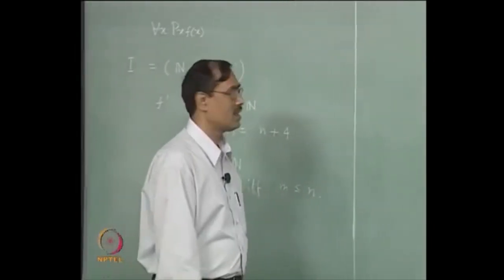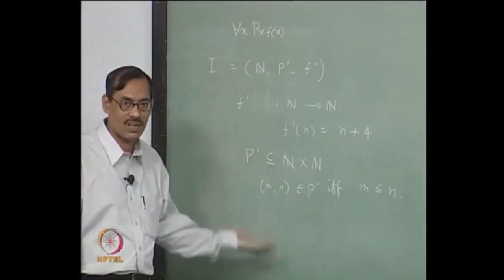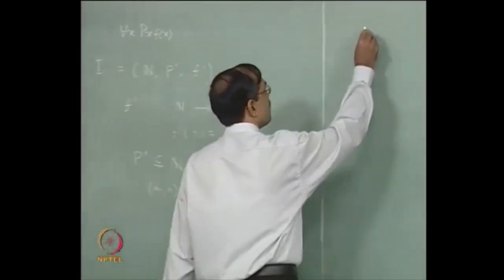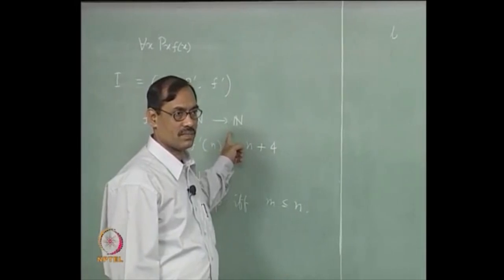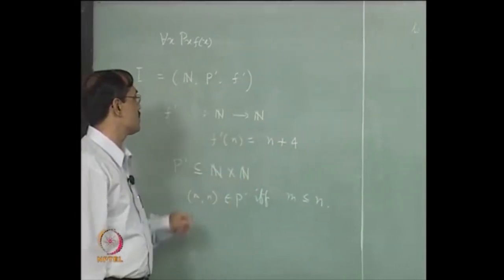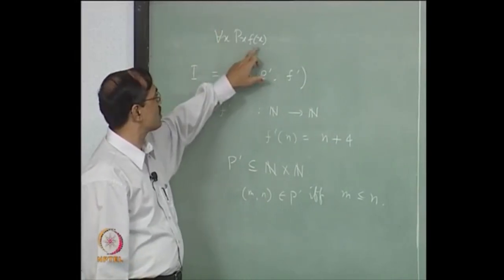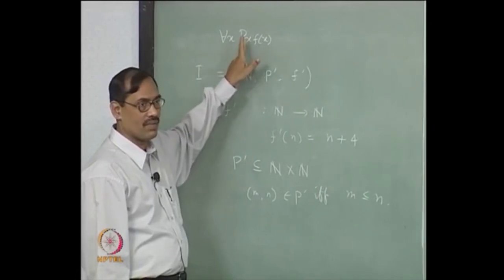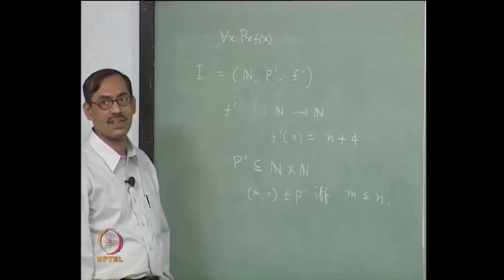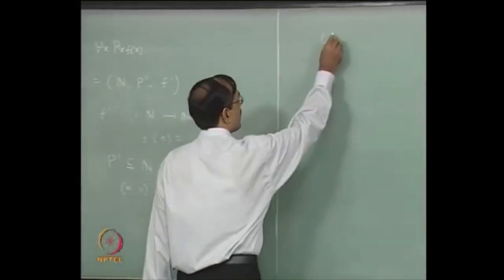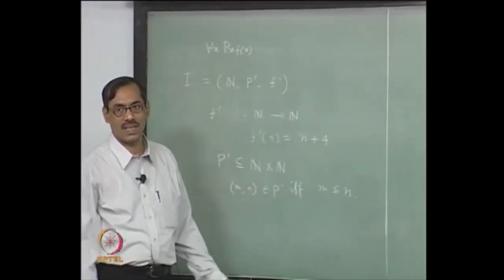Let us start with one state. A state begins with a valuation. There is only one variable x occurring here. Let us say l is one valuation under this interpretation. We can give l(x) = 2, fixing it arbitrarily, and see what happens.